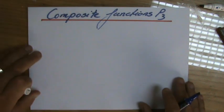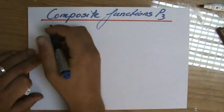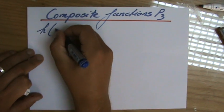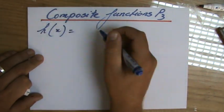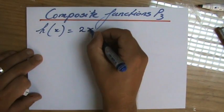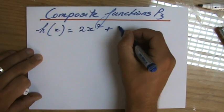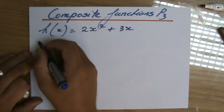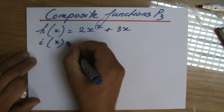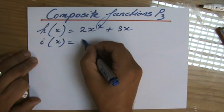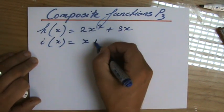Okay, composite functions part 3. Let's say we have the function h(x) equals 2x squared plus 3x. Now we have the function i(x) and that will be x plus 7.